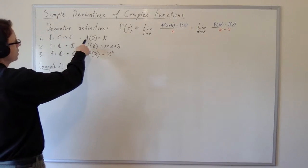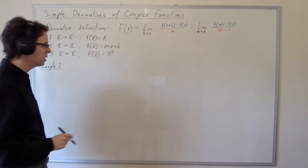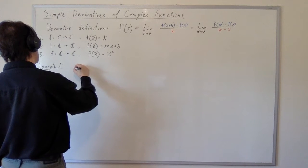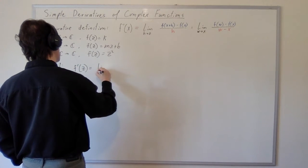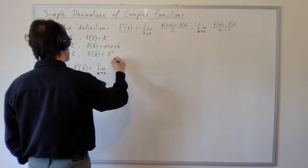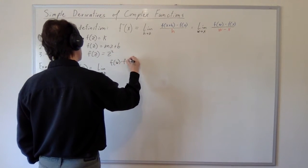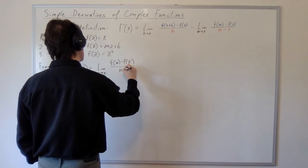If the function f has the formula f of z equals k, a constant, we can calculate the derivative fairly simply. f prime of z is going to be the limit as w approaches z of f of w minus f of z over w minus z.